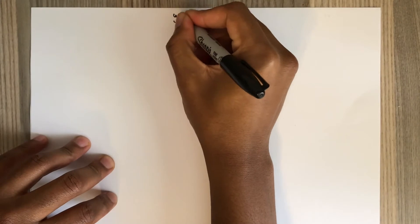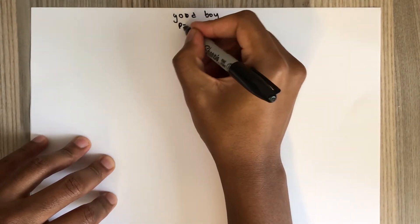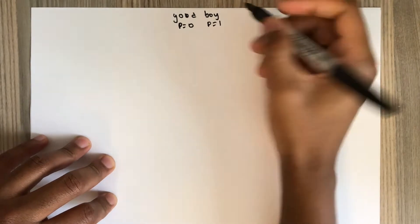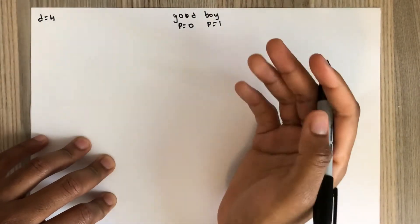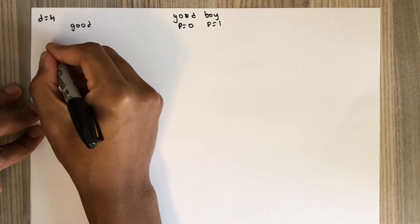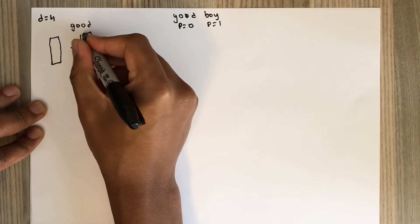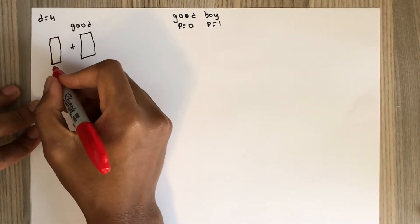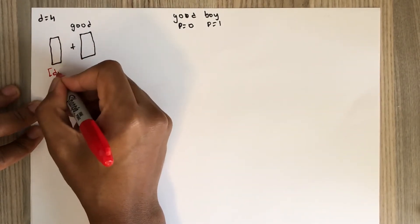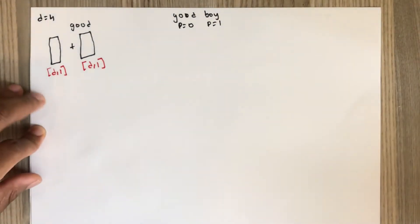Hello everyone. Today I want to do a numerical example on positional encoding. Let's take the example: 'good boy'. The position of the word 'good' is zero, and the position of the word 'boy' is one. For this example, d is the dimension of the embedding of each word. Starting with the word 'good', if the embedding has a dimension of d by 1, the positional encoding must also have a dimension of d by 1.